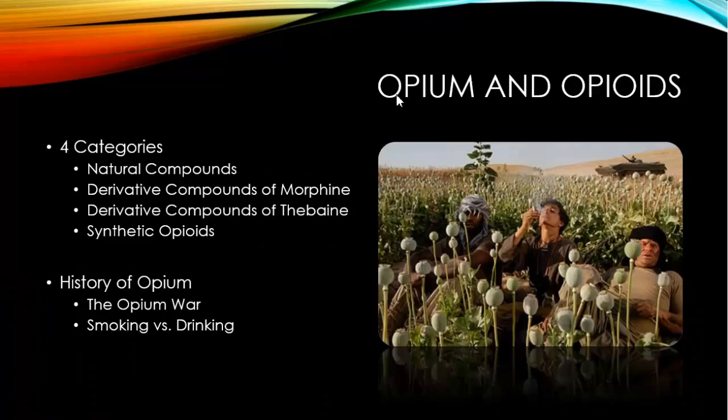Now, opium in history. The method of harvesting raw opium has not changed much in more than 3,000 years. It still takes place in villages of Myanmar, Laos, Thailand, Afghanistan, Kazakhstan, Mexico, Colombia, Peru, and other countries where the weather is hot and the labor is cheap.